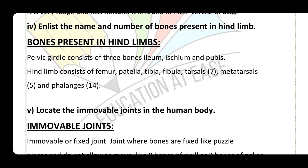Question number four: what are the names and number of bones in the hind limb? The pelvic girdle is attached to the hind limb and consists of three bones: ileum, ischium, and pubis. The hind limb bones are: femur, patella, tibia, fibula, 7 tarsals, 5 metatarsals, and 14 phalanges.